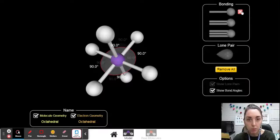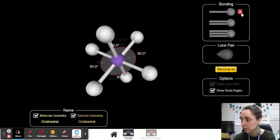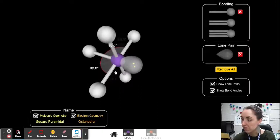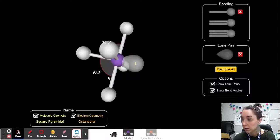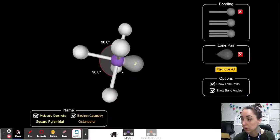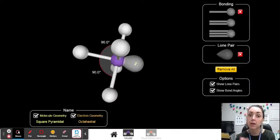But let's replace one of these bonds with a lone pair. You'll see my molecule geometry is octahedral. My electron geometry is octahedral. So if I replace it with a lone pair, my electron geometry is still octahedral because I have one, two, three, four, five, six electron domains. So five bonds, one lone pair, six total domains. Octahedral electron geometry.